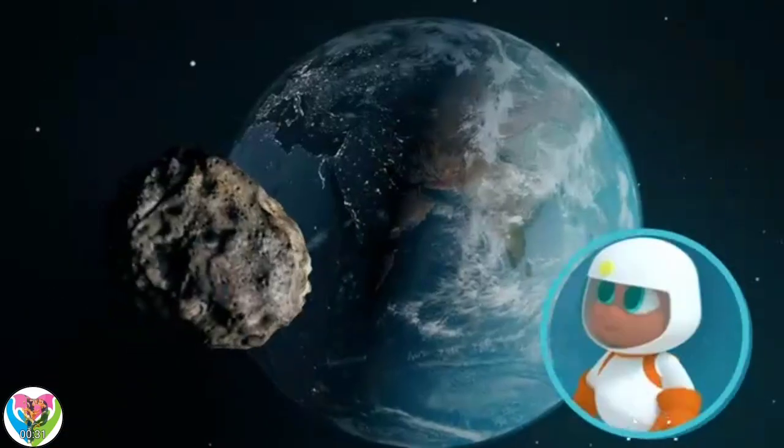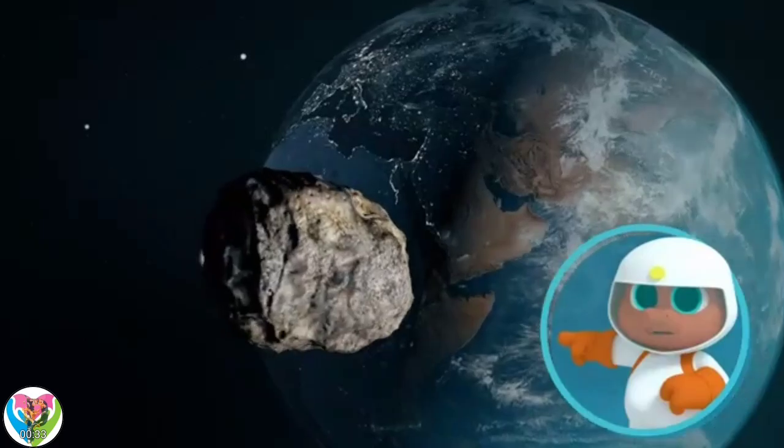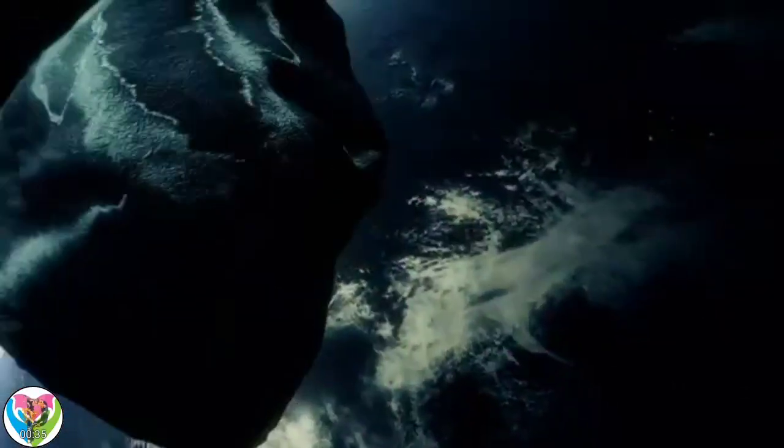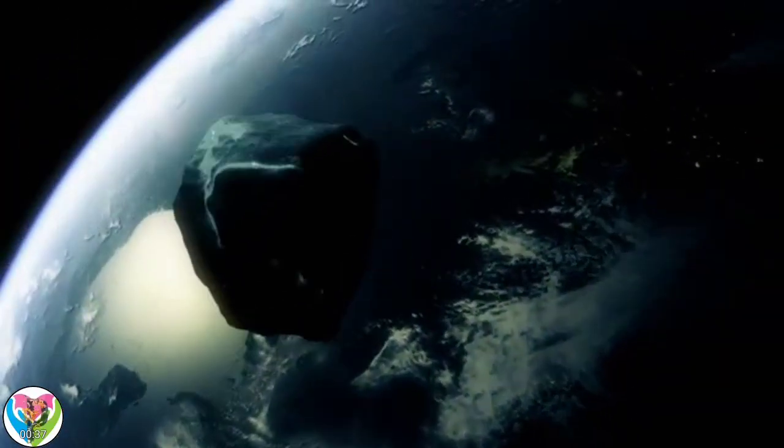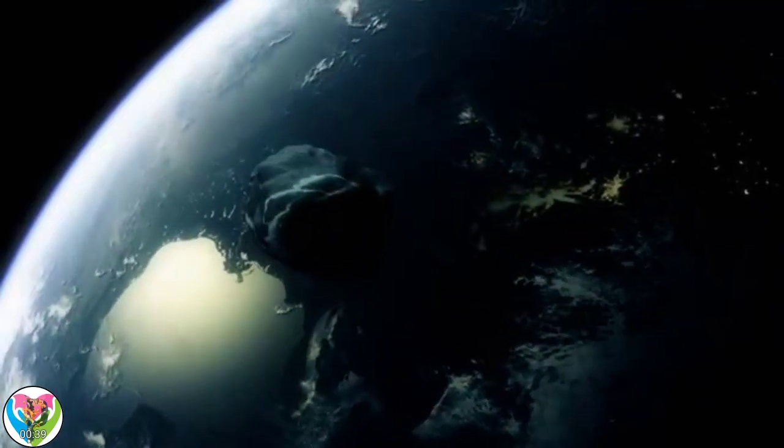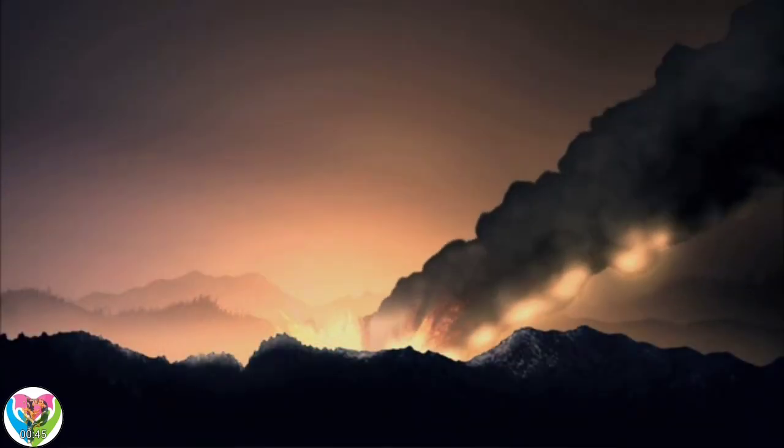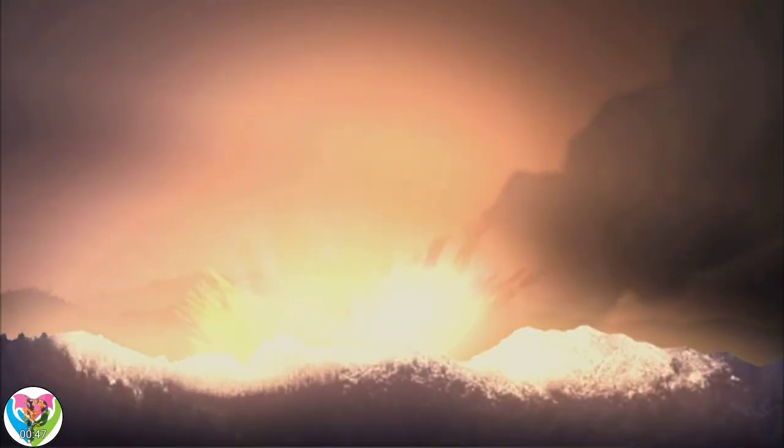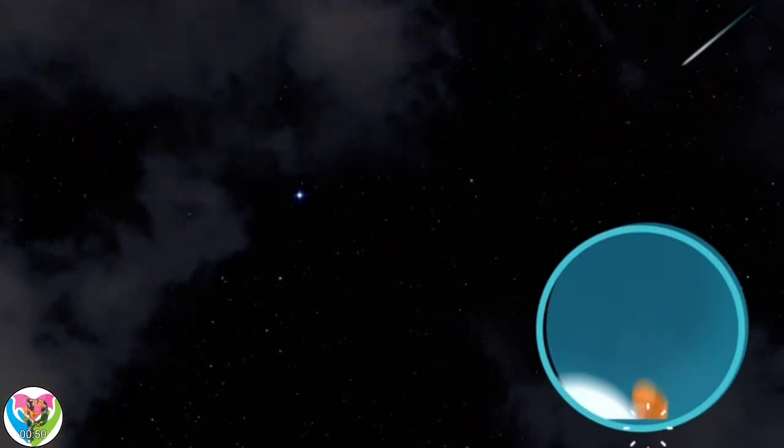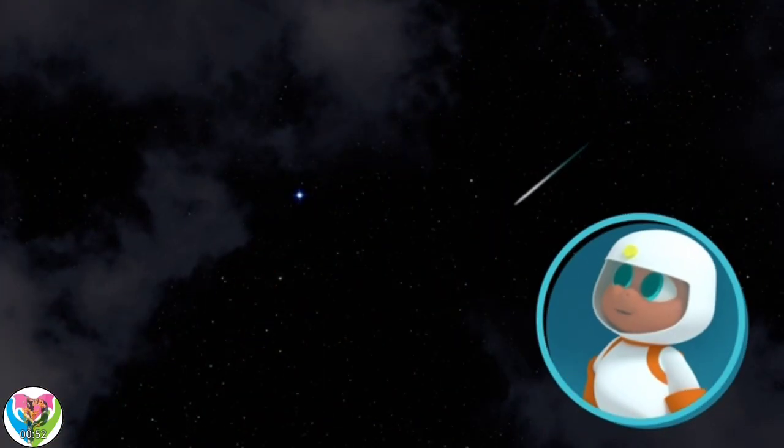It's getting closer! When an asteroid enters the Earth's atmosphere, it's called a meteor. As the meteor gets even closer, it burns up, leaving a trail of bright light which people call a shooting star. Oh look, Corby, there's one now!